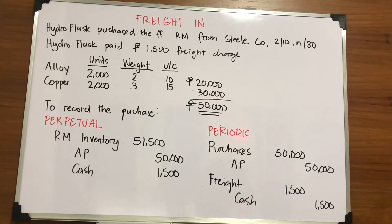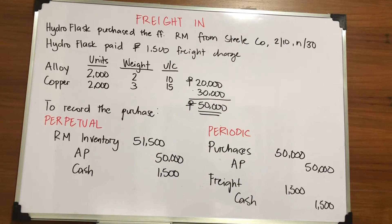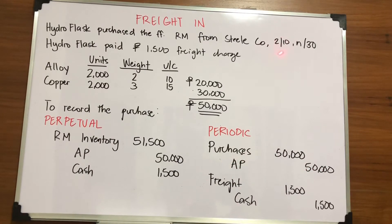For the periodic inventory system, the general rule is that invoice cost is recognized in the purchases account while freight is charged separately under a freight account — it is not part of your total raw materials cost. You debit purchases account for $50,000 and credit accounts payable $50,000 due to the credit terms. Then you debit freight for $1,500 in a separate account and credit cash $1,500 because of the word 'paid.'